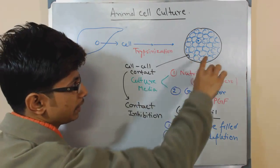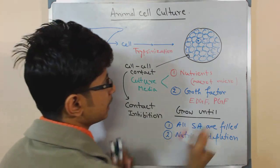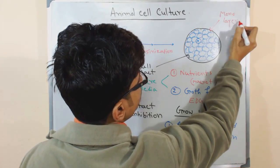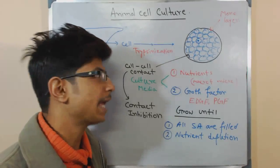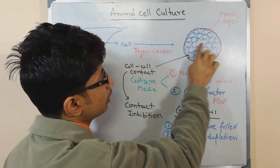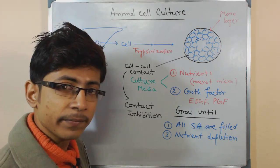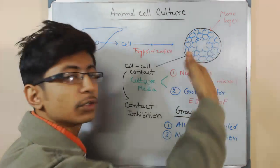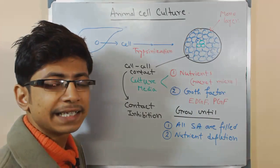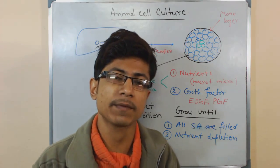Contact inhibition is a self-retaining process that keeps the cell population in a synchronized and homogeneous state. It gives you a homogeneous single layer of cells called a monolayer. If you scrape some cells from the monolayer, that region of the surface becomes free, and new cells start to fill that gap.